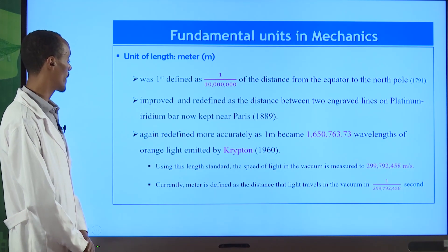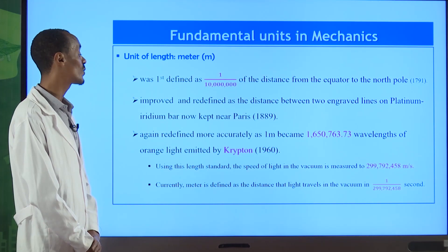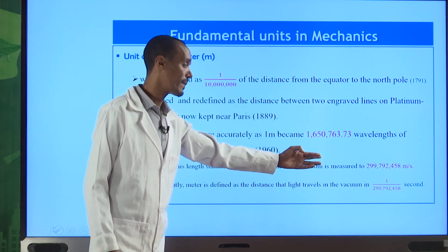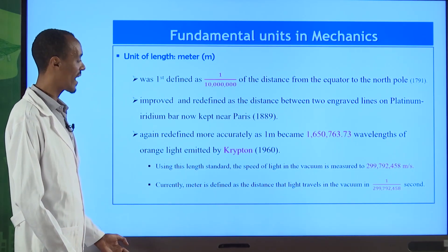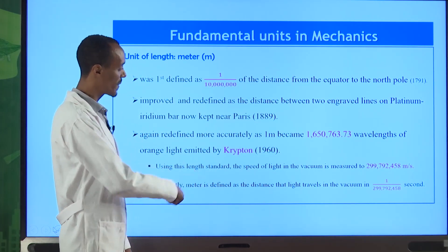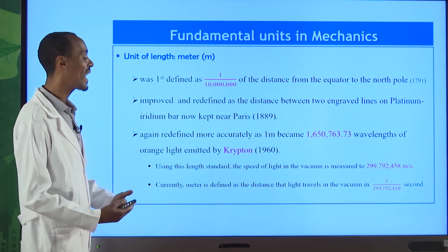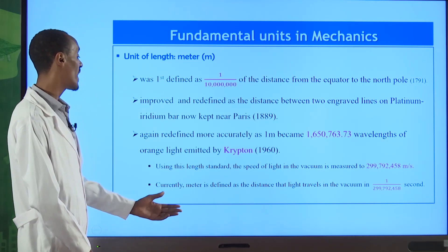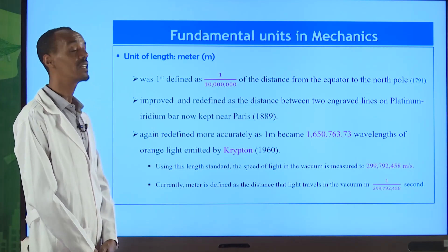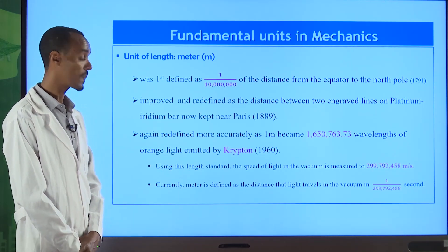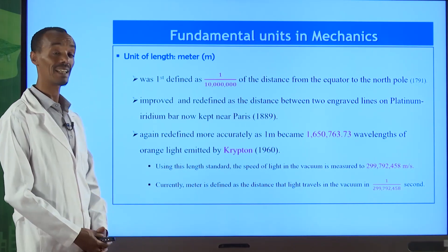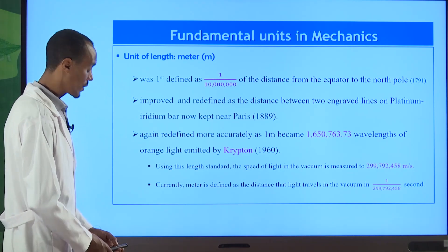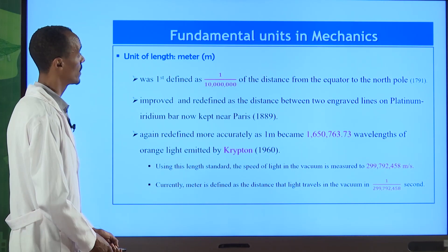This krypton-based standard also contributed to measuring the speed of light in a vacuum. Using that magnitude of the speed of light, meter was redefined finally. One meter is defined as the distance that light travels in a vacuum in 1/c seconds — where c is the speed of light. The distance traveled by light in the vacuum in one over c seconds is what we call one meter.